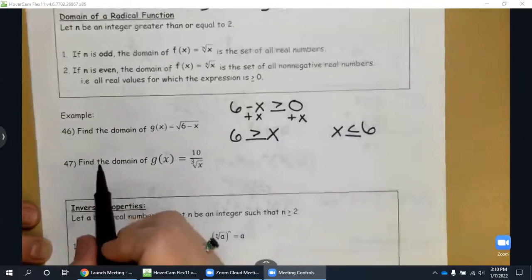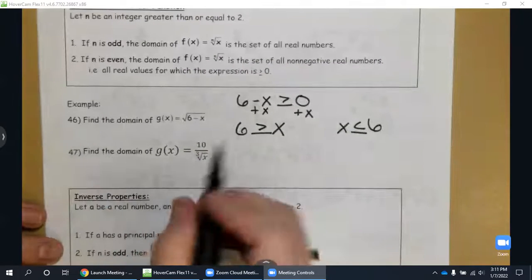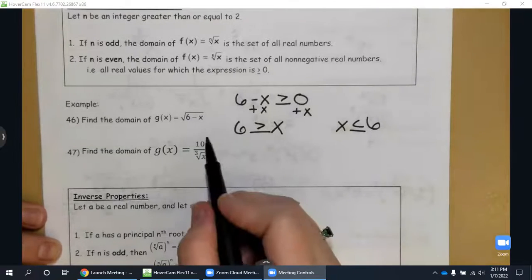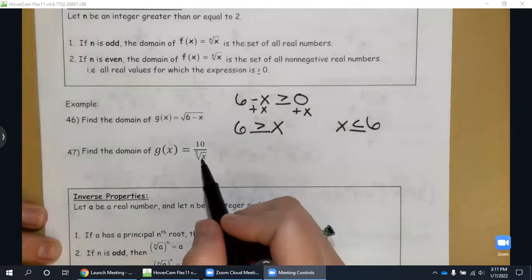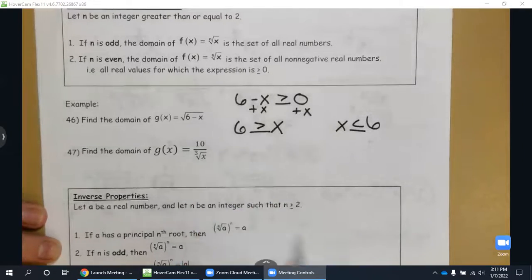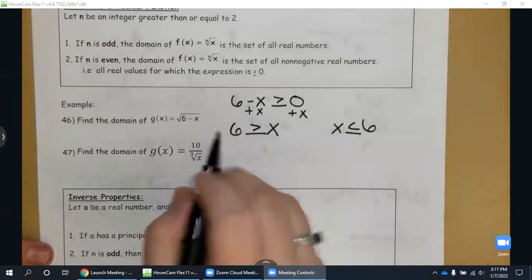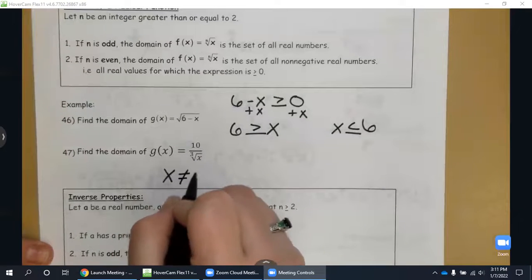Then looking at 47, I have a cube root which is an odd root, and so that means I can have negative values. But I have it in a denominator, and we have a restriction about the denominator being that it can't have zero. So x in this case just cannot be zero.